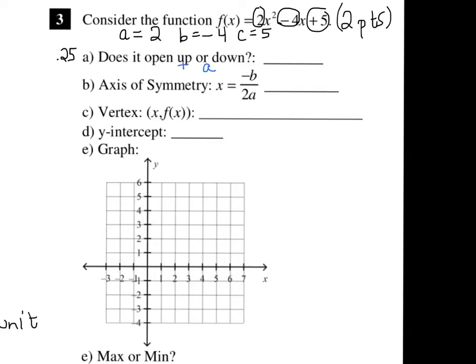If A is positive, it opens up. If A is negative, it opens down, and we have a positive number, so this opens up. Next, for the axis of symmetry, we need to use the formula negative B over 2A. So I'm going to write down a negative sign and plug in the number for B, which is negative 4, so it's negative negative 4. We'll divide it by 2 times the number for A, which is 2. The negative negative on top became positive, and 2 times 2 on the bottom is 4, and 4 over 4 is 1.